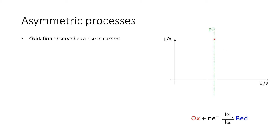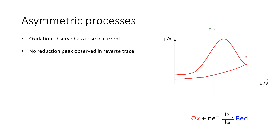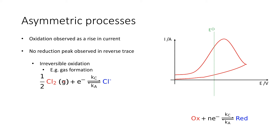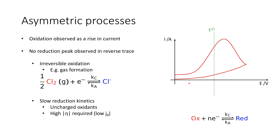We can infer extra information by slowing or speeding up the sweep. Considering asymmetric processes: if we ramp the potential up and see oxidation as expected, but on the way back down see an asymmetric curve with no reduction peak, this tells us something about the process. It could indicate an irreversible oxidation — for example, in the electrolysis of sodium chloride the oxidation of chloride to chlorine gas, which escapes from solution. Alternatively, there may be slower reduction kinetics, uncharged oxidants not carried to the electrode, or a reduction peak appearing at considerably lower potentials requiring a higher overpotential to find.